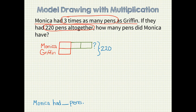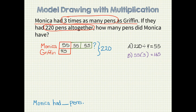Can you see from the model what the next step should be? We need to find out how many pens each unit represents. Since there are four unit bars total and 220 pens altogether, I should divide 220 by 4, which is 55. If each unit bar represents 55 pens and Monica has three unit bars, then 55 times 3 equals 165. Monica had 165 pens.